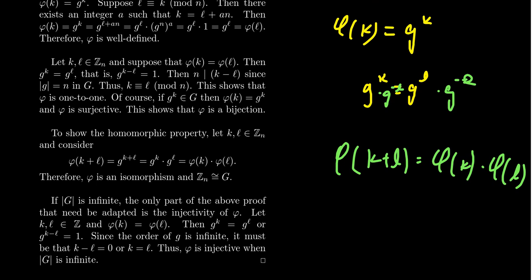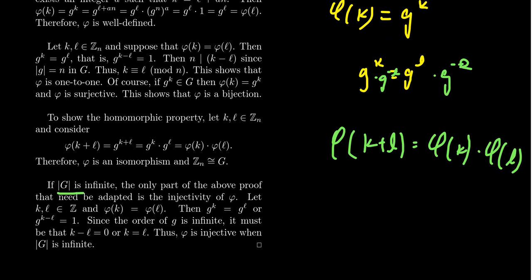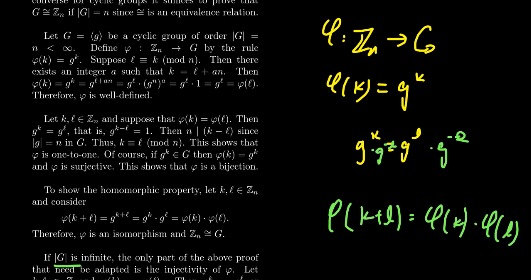What if we had an infinite group? What if the order of G was infinite? Well, the only part of the above proof that needs to be adapted really is the injectivity argument. Because notice here that in terms of being well-defined, we really didn't need to use, if you're infinite, you don't need to make a well-defined argument whatsoever. Because in that situation, you're comparing to the infinite cyclic group Z. There's no congruence classes, and therefore this map has no worries about being well-defined.